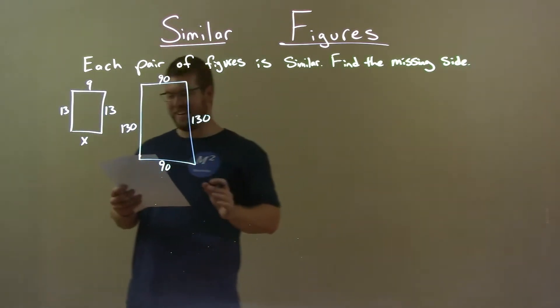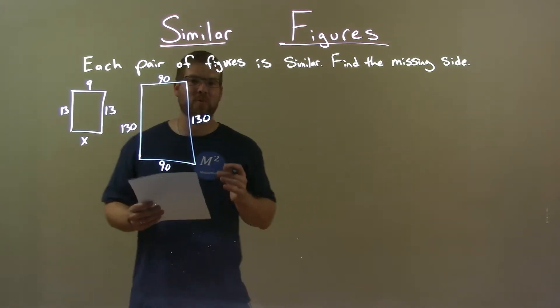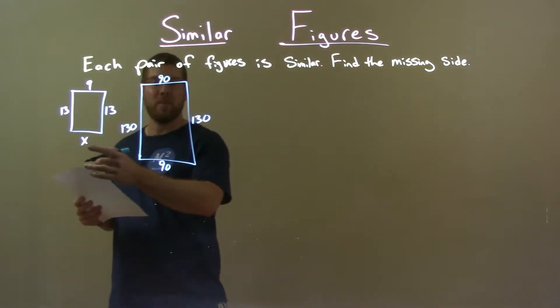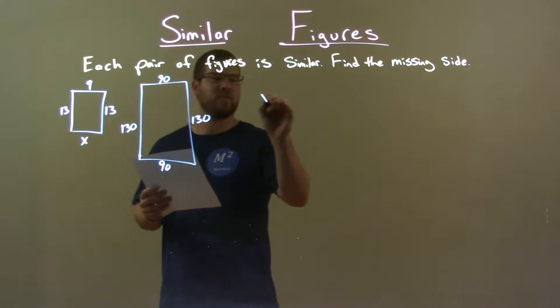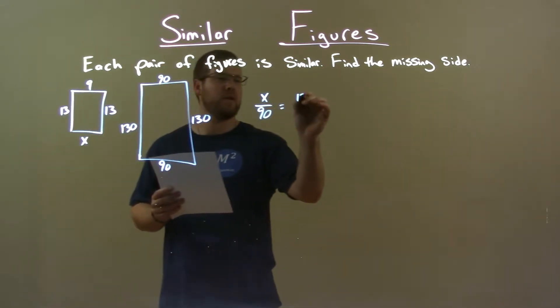Well, since these rectangles are similar, we know their corresponding side lengths are proportional. So let's set up a proportion. X and 90 match up, so X over 90 equals 13 over 130.